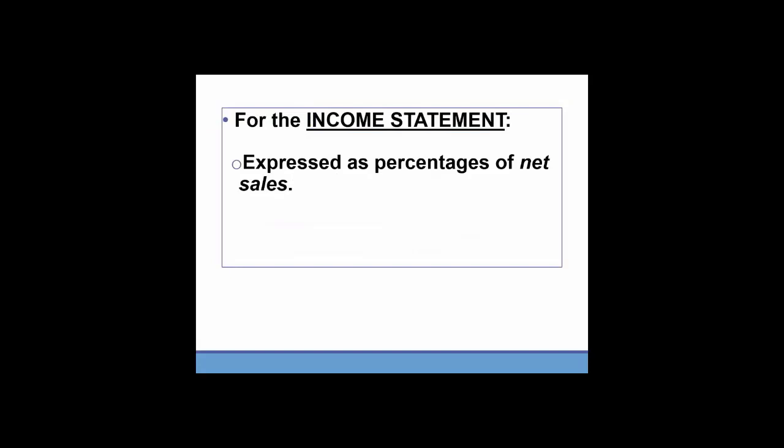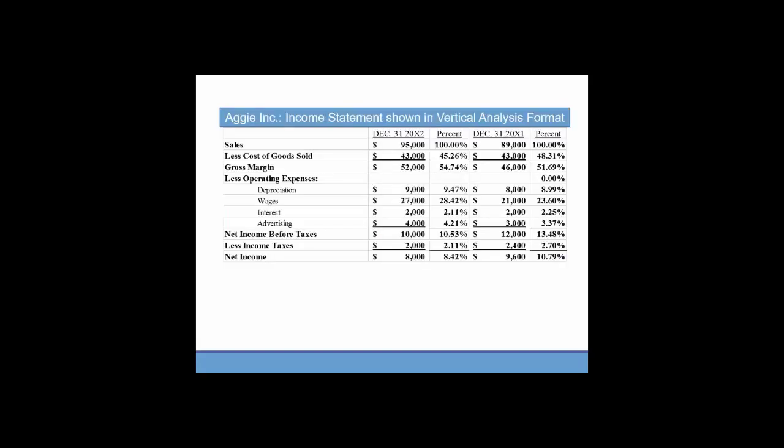Now we can turn our focus to the income statement. In the income statement, everything is expressed as a percentage of net sales. So you'll take the account balance for every income statement item and divide by net sales. Looking at Aggie Inc., I have prepared this vertical analysis for you. Sales is 100% of sales in 20x2. Cost of goods sold is 43,000 divided by 95,000 or 45.26%. We can jump down and look at wages. Wages were 27,000, so we'll take 27,000 divided by 95,000, and we'll see that wages were 28.42% of sales. So about 28% of sales went toward paying for wages.